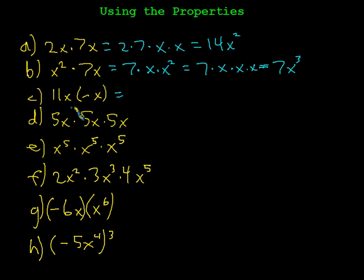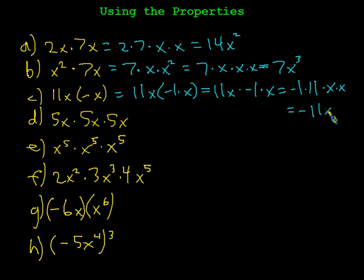This guy was 11x times negative x. That is the same as 11x times negative 1 times x. I'm going to go ahead and take advantage of the associative property and throw away the parentheses. Everything is being multiplied together. So for that reason, I'm allowed to throw away the parentheses. I'll use the commutative property to move that negative 1 to the front. And then times x times x. And in the end, I get negative 11x squared. There we go.